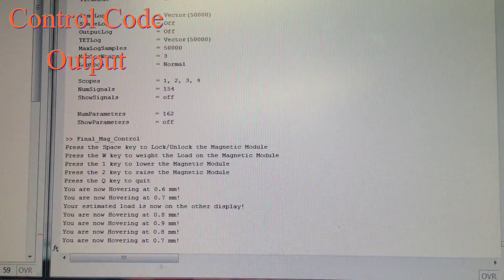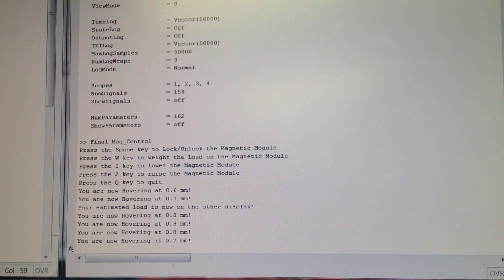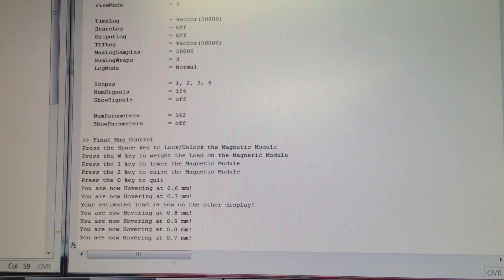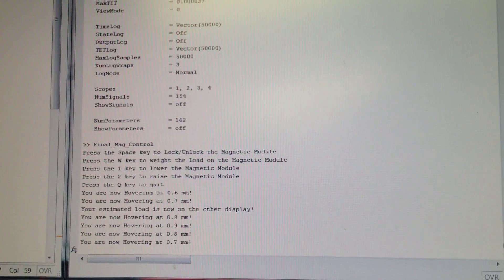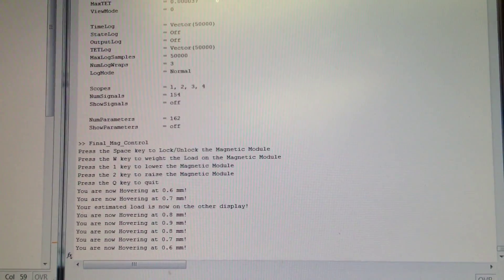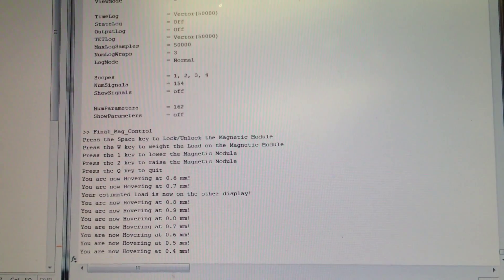In this last section of the video I will show you our control code output and how we control our module. Our module is controlled by pressing either the 1, 2, Q, W or space keys on your keyboard. After a key was pressed it will then display an output to the screen of what it just did.